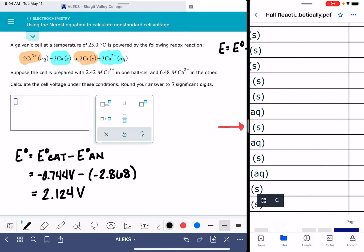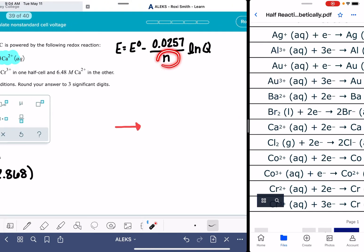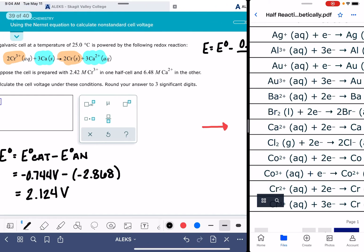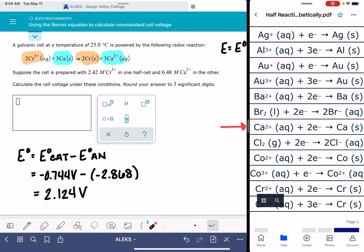Now, while we have this table of half reactions open, let's also get the value of N. N is the number of moles of electrons that are being exchanged in the overall redox reaction. And one of the easy ways to determine that is by looking at our half reactions.